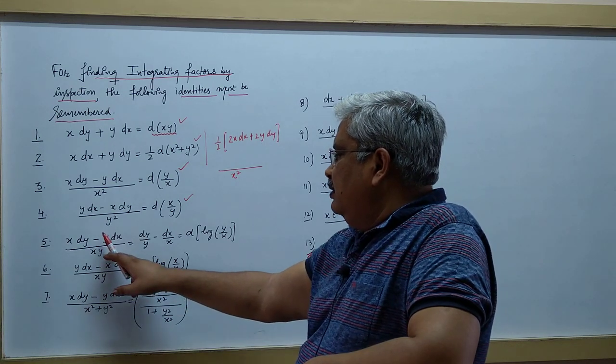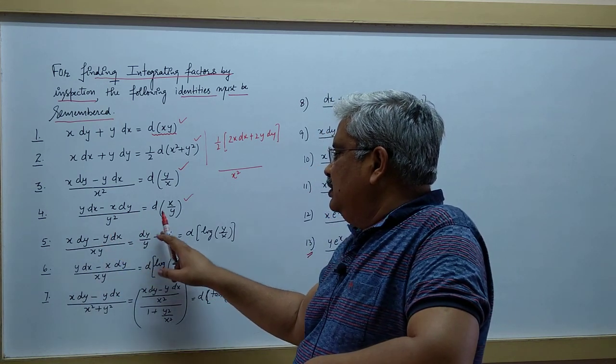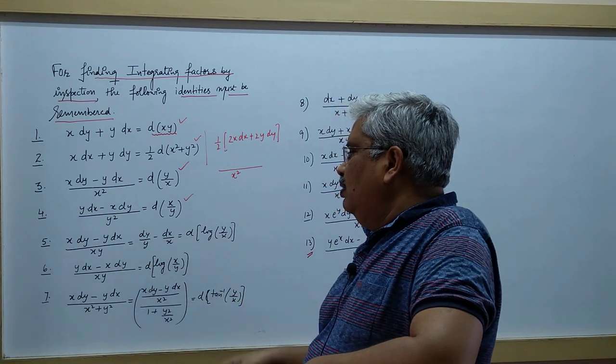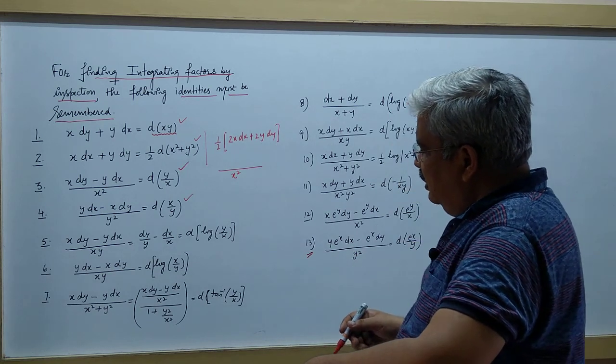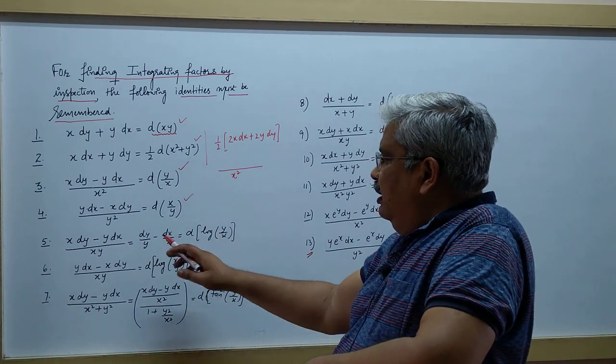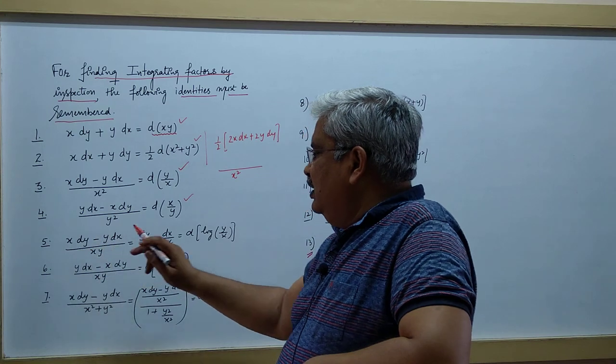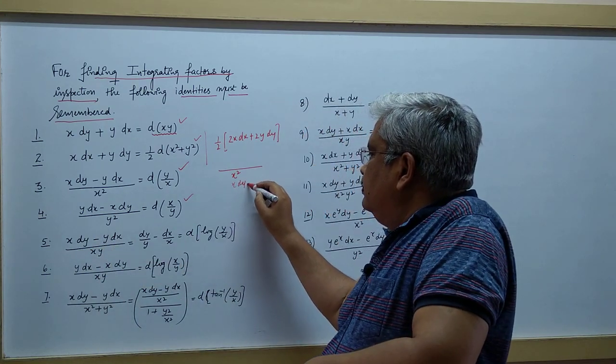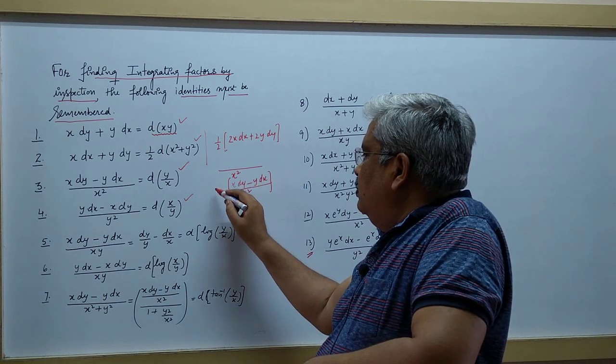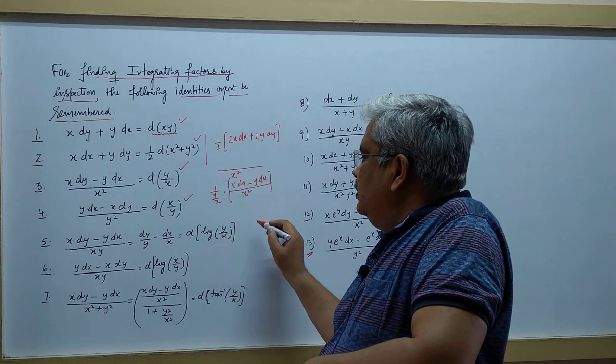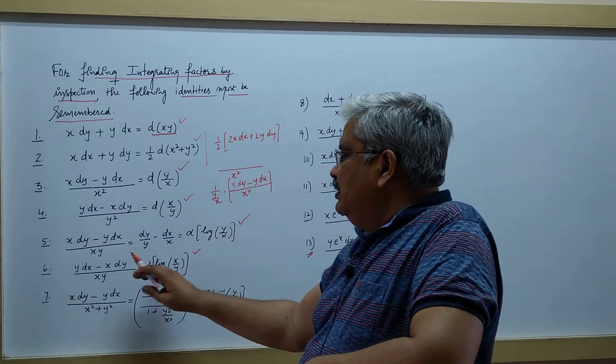But if it is x·dy - y·dx divided by xy, you can write d(y)/y minus d(x)/x, which becomes log(y/x). Similarly, with opposite signs, it is log(x/y).